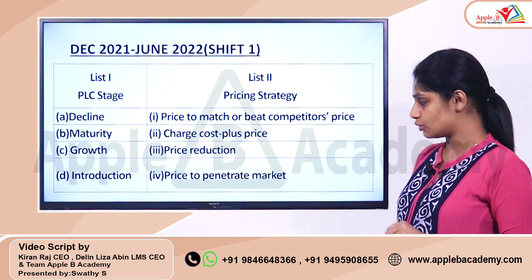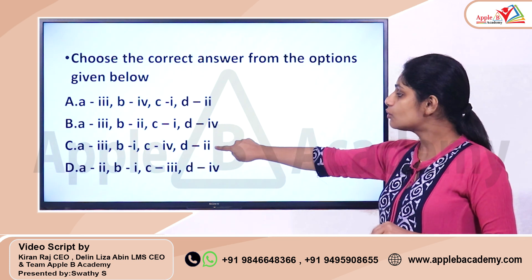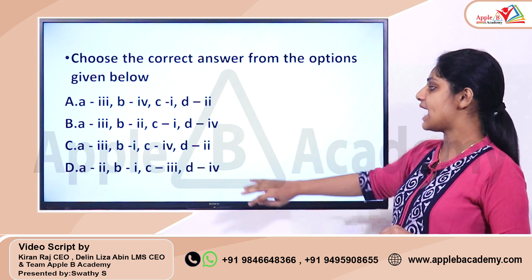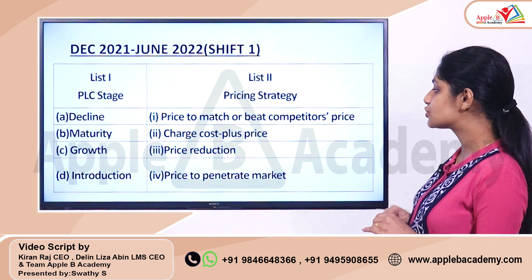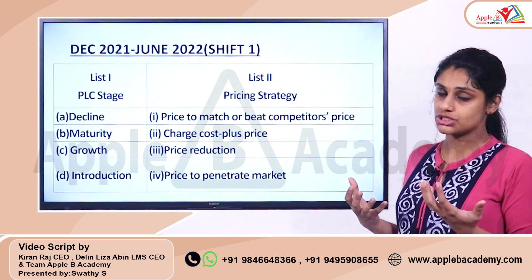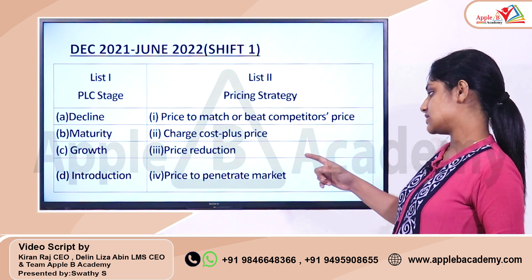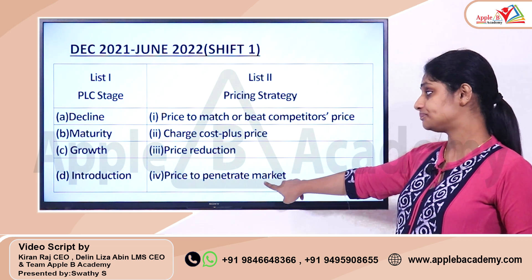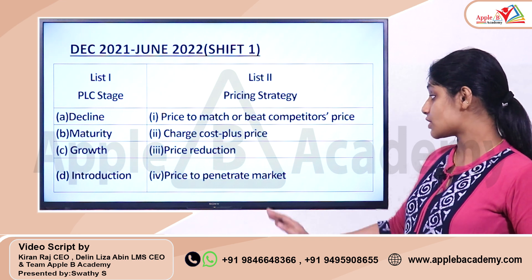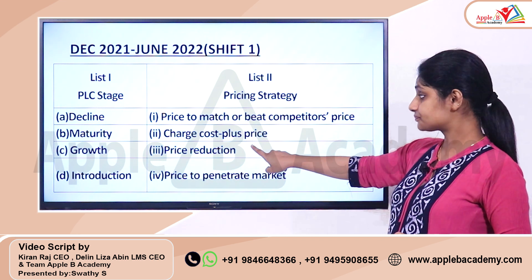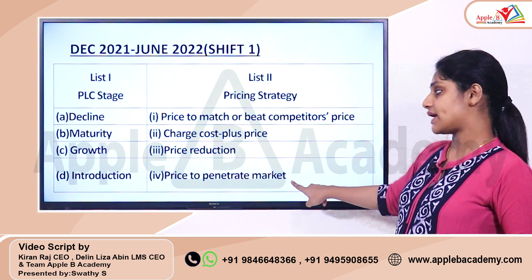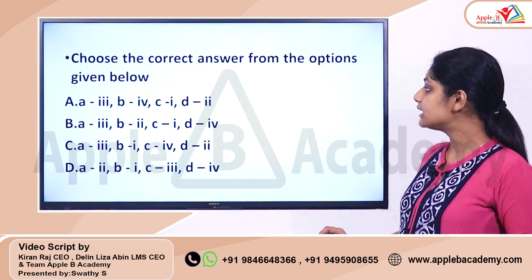Price to penetrate the market. So, C you can actually match with 4, right? D with 2 and C with 3, right? I'm sorry, C with 4. D with this charge cost plus price, that means D2 and growth stage. C you can actually connect with the price to penetrate market. So, D2 and C4.